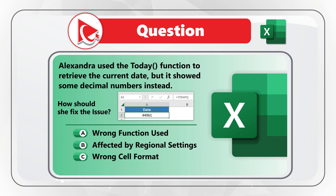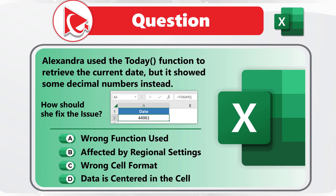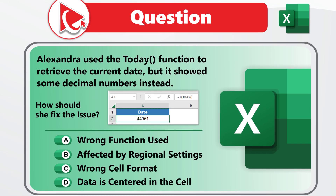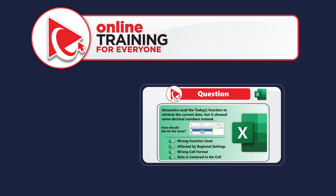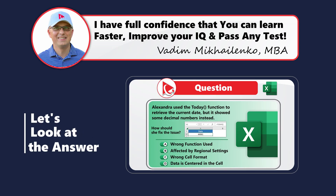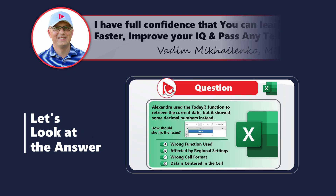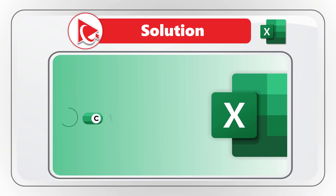You need to select one of four choices: choice A, wrong function used; choice B, affected by regional settings; choice C, wrong cell format; and choice D, data is centered in a cell. Take a close look — maybe pause this video — to see if you can come up with the solution.